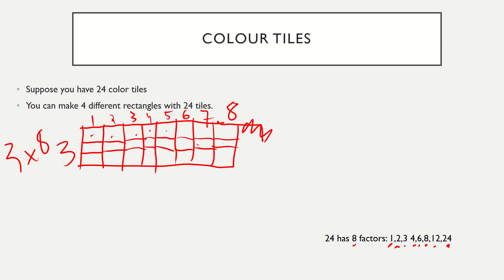Counting the tiles — one through 24. So here is an example using color tiles of 24 color tiles: three rows with eight columns gives us the number 24.